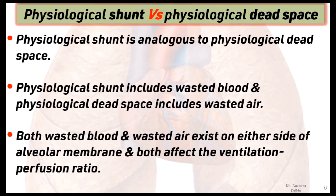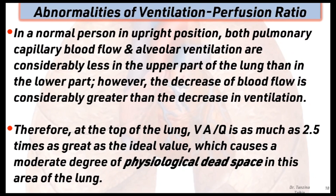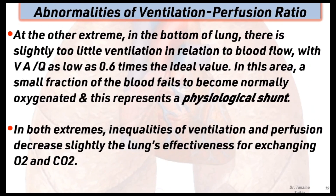In a normal person in the upright position, both pulmonary capillary blood flow and alveolar ventilation are considerably less in the upper part of the lung than in the lower part. However, the decrease in blood flow is considerably greater than the decrease in ventilation. Therefore at the top of the lung, this ratio is as much as 2.5 times the ideal value, causing a moderate degree of physiological dead space in this area of the lung. At the other extreme — at the bottom of the lung — there is slightly too little ventilation in relation to blood flow.